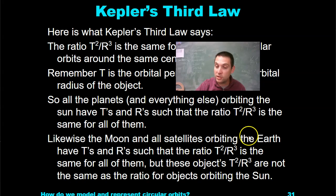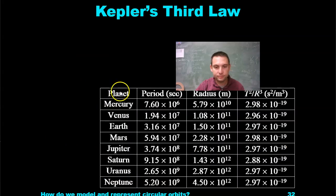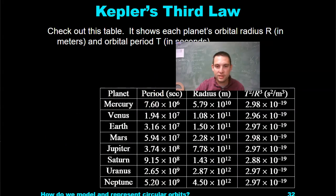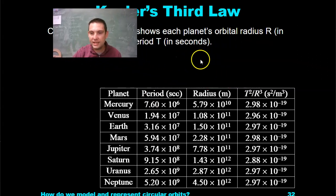Not just relative to each other, because if you change R, then obviously the period is going to change. Check out this table. It shows the planet's orbital radius in meters and orbital period in seconds. Looking at each of these, we have the period and we have the radius for each planet. The ratio of the period squared to R³ is 2.98 for Mercury, 2.96 for Venus, 2.97.